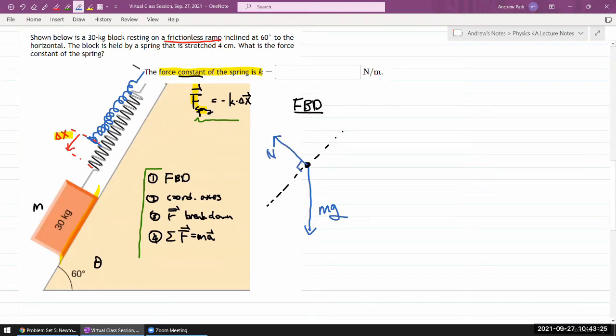And the spring is touching the block as well, so we are going to have a spring force. Let me draw the spring force along the surface - it seems parallel so I'm gonna assume it is. That looks like a complete free body diagram. The block is resting.